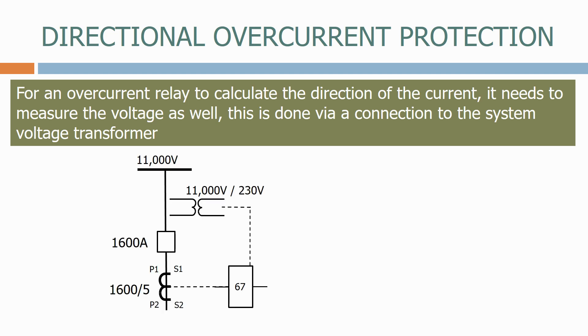Here we have the typical feeder circuit from before. This time we have connected a voltage transformer to the relay, with a ratio of 11,000 volts to 230 volts.